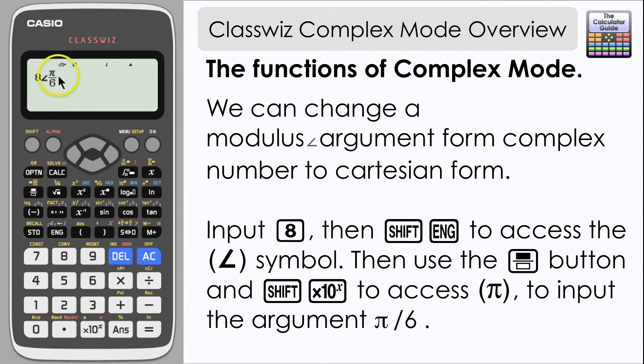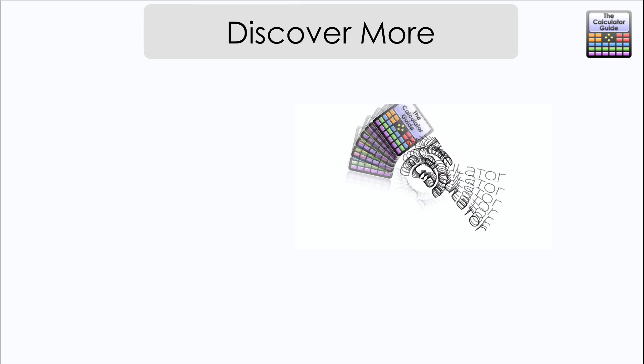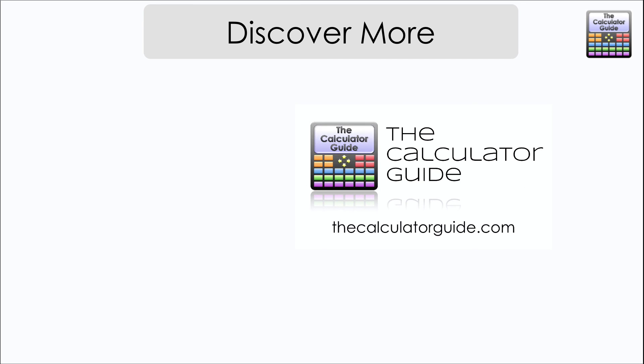Once you've inputted that, if you go back to the options menu, navigate down and select option 2. This is to change it into a plus bi, so Cartesian form. Press equals and here we have our Cartesian form: 4 square root 3 plus 4i. That's it for this video on how to change between Cartesian and modulus-argument form complex numbers.